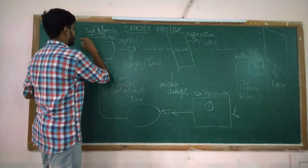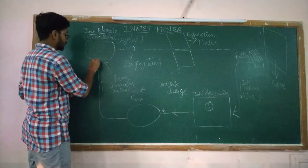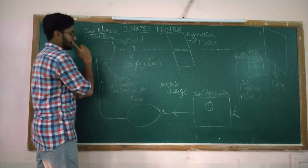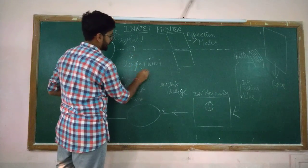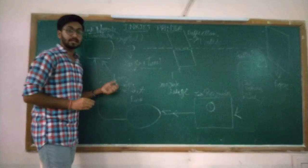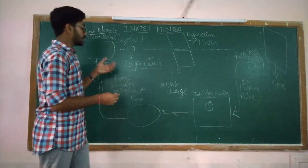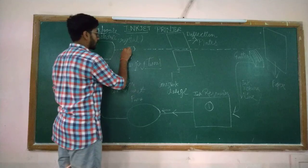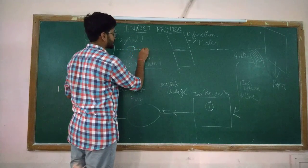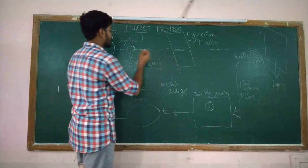After passing the ink from the ink nozzle, it is given to the charging tunnel. What does the charging tunnel do? The charging tunnel is used here for converting the ink droplets from uncharged to charged particles.